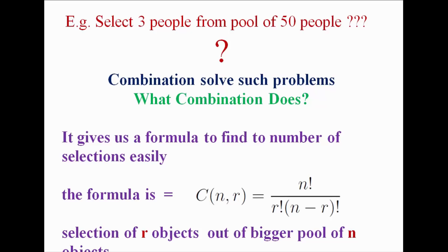If you have to select more than 3 people or 50 people it will become complicated to list manually, so we use the combination formula. The formula is: C(n, r) — selecting r objects from a pool of n — equals n factorial divided by r factorial into (n minus r) factorial.